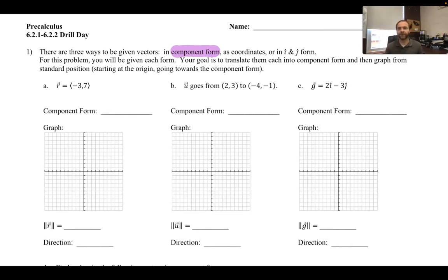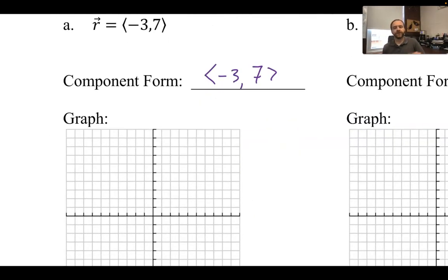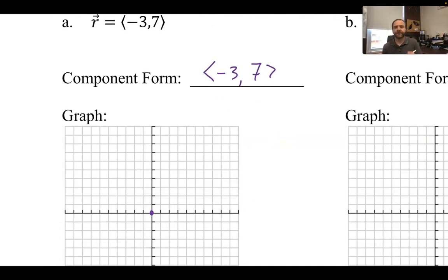Let's start with part a. Since I highlighted component form in purple I'll keep that color coding. For part a, I'm told I have vector r — it goes to the left three, up seven: negative three comma seven. That is already my component form, there's nothing I need to do to that. So I'm going to start at the origin, go to the left three, and then go up seven from there.